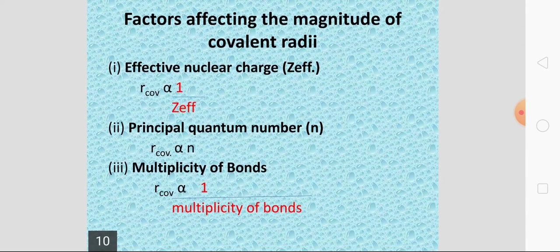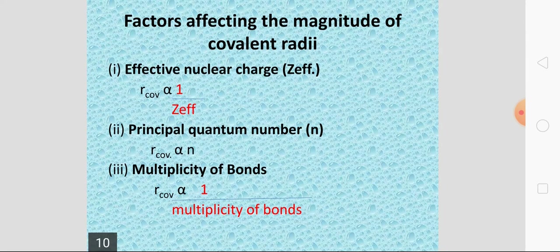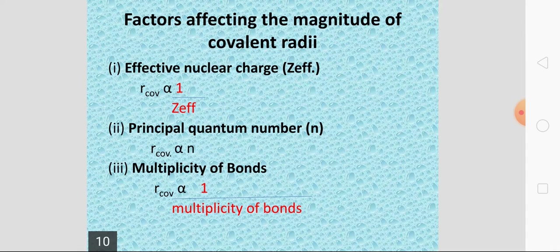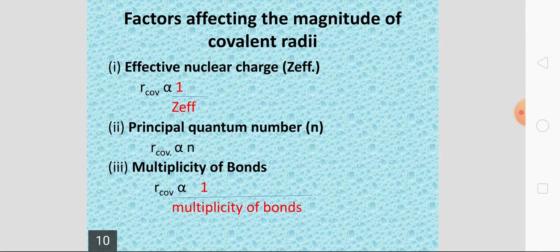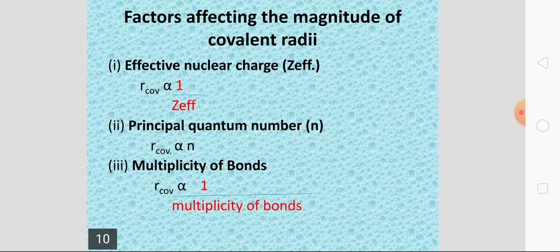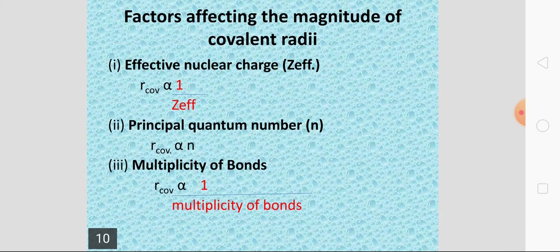As the principal quantum number increases, the outermost orbital shell increases and the distance increases. Regarding multiplicity of bond, there is an inverse relationship — if bond order increases from single to double to triple bond, the attraction between atoms increases, and covalent radius decreases as bond multiplicity increases.